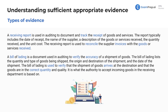Looking through some other types of audit evidence — these are documents the auditor is going to use to verify and corroborate what they find in the client's accounting records. We have the receiving report, which is used to document and track the receipt of goods. It typically includes the date of receipt, the name of the supplier, a description of the goods received, the quantity received, and the cost. This is used to reconcile invoices with goods or services and to verify the existence of legitimate expenses.